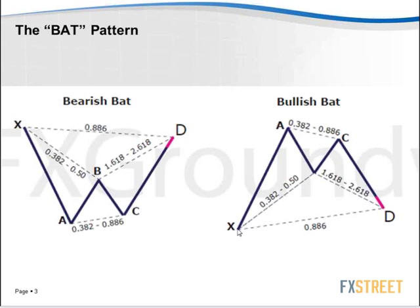In other words, if the distance from X to A equals $1, the distance from A to B — the B point — would be anything from $0.38 to $0.50. Pretty simple. Just a normal, up to a 50% Fibonacci retracement that most of you are probably familiar with. Then, after that retracement stops — and it almost inevitably always does — you will get another bounce and a retest of that previous high.